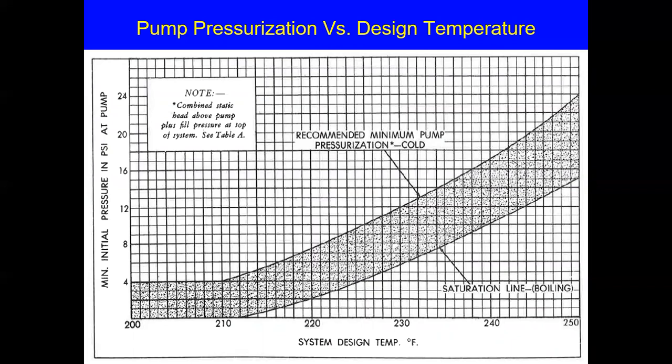You can find charts for pump pressurization versus design temperature. Here's the saturation/boiling pressure as a function of temperature, and here's the recommended minimum pump pressurization. At 250 degrees, the minimum comes out 24, maybe 25 — the calculation says 24 but the slides say 25. Let's check this pressure — let's verify. At 220 degrees, the chart is showing 2 psi as the saturation or boiling pressure. Let's go back to Steam Tab Companion and put in 220, liquid, English.